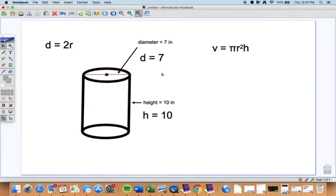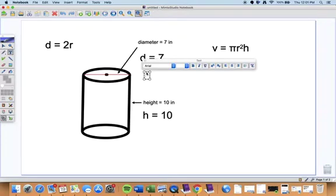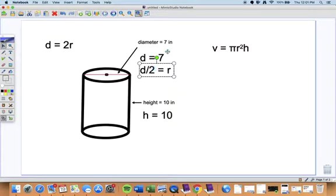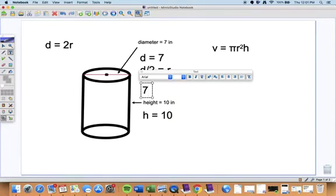So when they give you the diameter and you want to figure out what the radius is, all you got to do is just take the diameter and divide it by two, and then that gives you the radius. So in this case, if it's seven, you would just go seven divided by two, and that equals three point five, right? And we'll say inches right there.